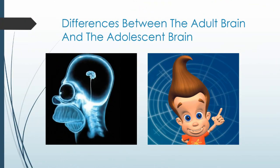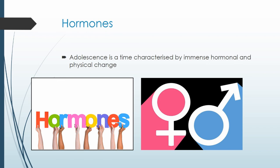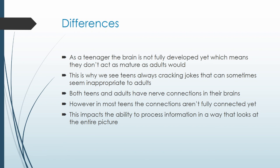Today I am going to talk about the differences between the adult brain and the adolescent brain. There is a big difference between them. Teens endure most of their time undergoing puberty, which is a time characterized by immense hormonal and physical change. The adolescent brain is not fully developed during the teen years, which means they don't act as mature as adults would. For example, this is why we see teens always cracking jokes that sometimes seem inappropriate to adults. Both teens and adults have nerve connections in their brains; however, in most teens the connections aren't fully connected. During adolescence, this impacts the ability to process information in a way that looks at the entire picture, which is why teens often choose risky activities as they do not see the consequences.